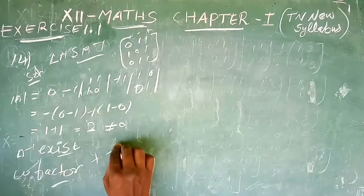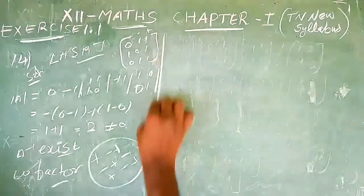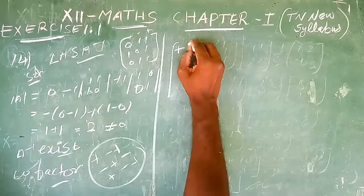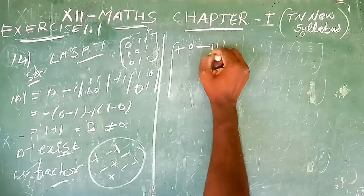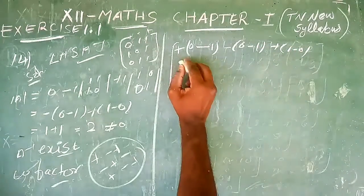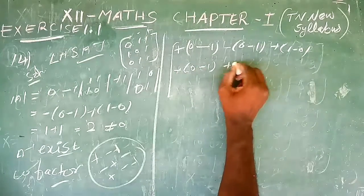The cofactor for a 3×3 matrix uses the plus-minus-plus pattern. At positions with zero, the result is zero. For the element with value 1, we get 1 times (0-0) minus 1, which equals -1.